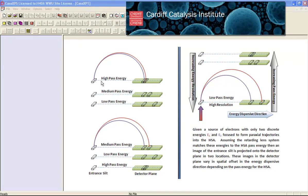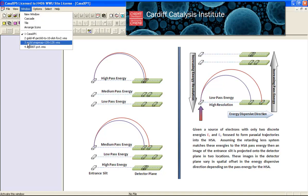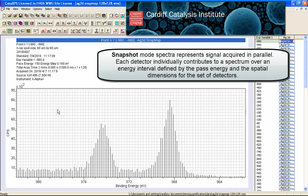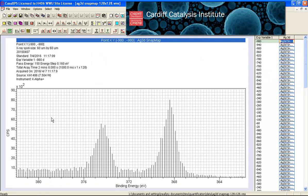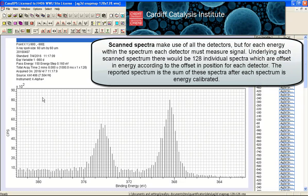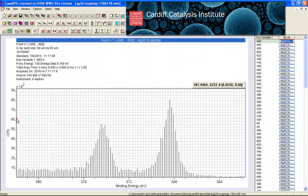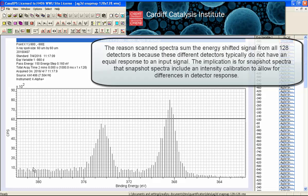The relationship between the pass energy, energy resolution, the size of the detectors, and the number of detectors can be seen if we look at snapshot mode data. This is where rather than scanning the voltages of the analyzer to acquire a spectrum, a specific energy is set and then the pass energy coupled with the dimension of the detector determines the energy interval, which is about 20 electron volts.